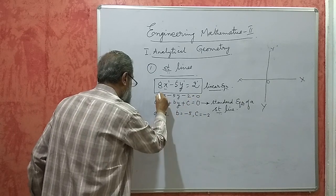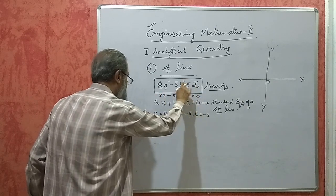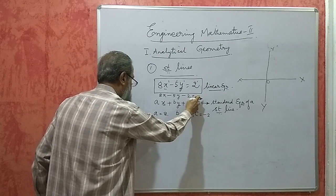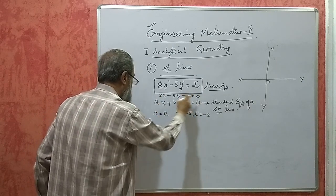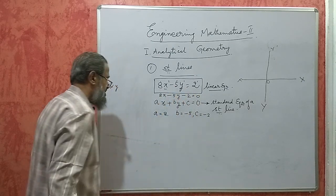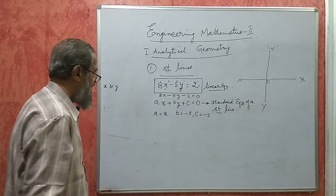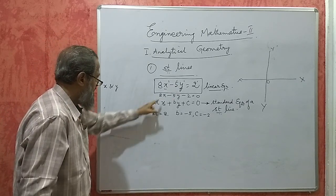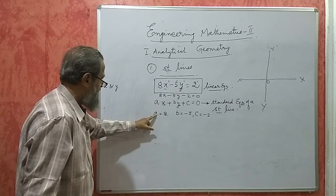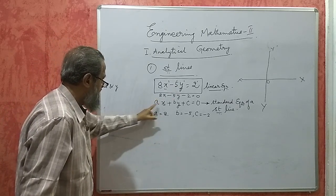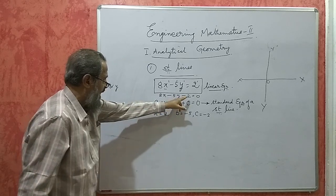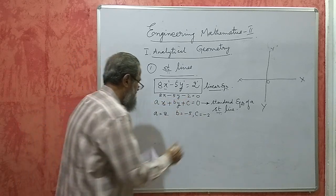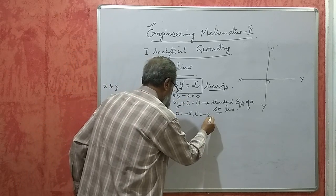If we transfer the constant to the other side so that 0 is on the right, it is said to be in standard form — the standard form of the equation. So a is 8, b is minus 5, and c is minus 2. These are the values of the constants.